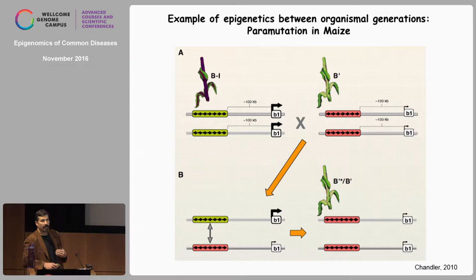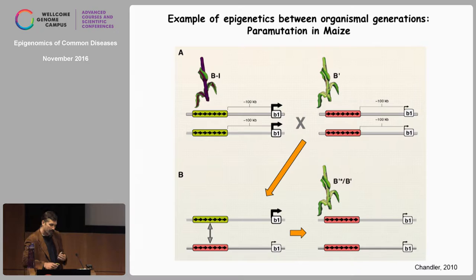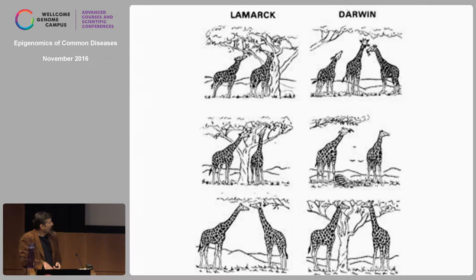The fact that this kind of information makes it into the gametes, along with the fact that epigenetic information — unlike DNA sequence — can respond to the environment (in budding yeast, higher temperatures produce tons of chromatin changes), has led to the retaking seriously of the idea that the environment in one generation could affect the phenotype of the next generation. This is often called Lamarckian inheritance, although that's somewhat of a misnomer.